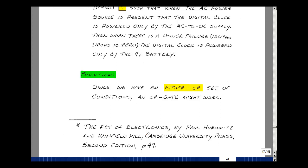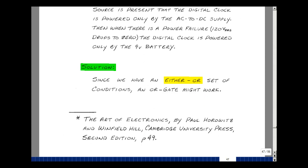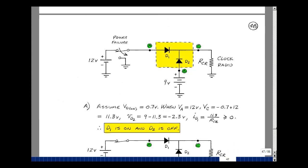How are we going to approach the problem? We're talking about an either-or condition. Maybe we could try an OR gate and see if that would work. In our block diagram description of the problem, we have two inputs to the logic circuit.